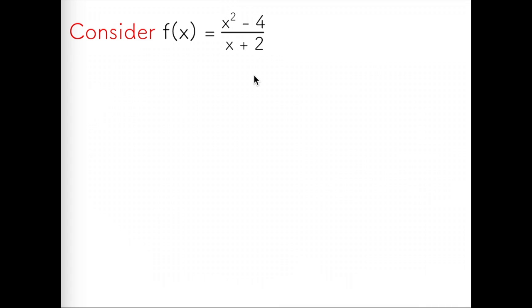However, this function is tricky. If you factor the numerator using the difference of squares factoring method, you'll see that this factors into (x - 2)(x + 2). We now have x + 2 on the top and the bottom, and we know that anything over itself is just equal to 1. So I can effectively cancel out those two expressions.